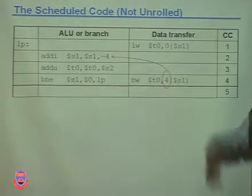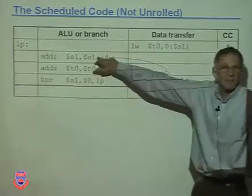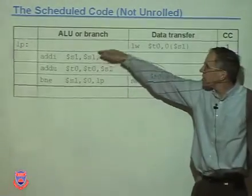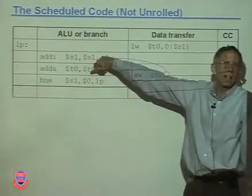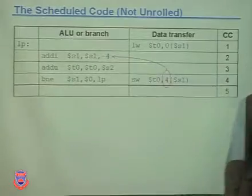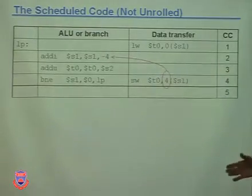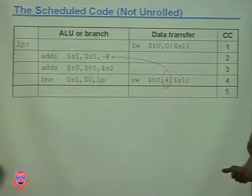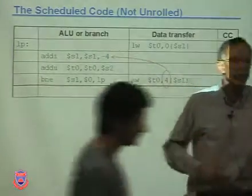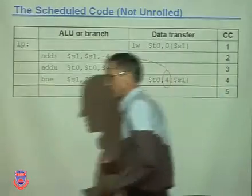If you remember in the original code, this came first, then this. This was the increment right before the branch - the second to last instruction. Now it's the second to the first instruction. The principle being: the compiler is allowed to modify the code when it schedules it.